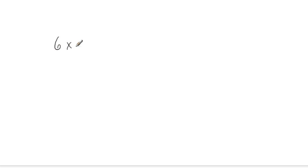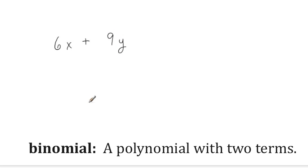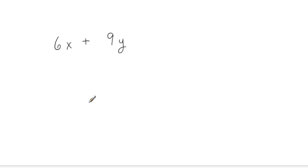Let's try another one. Let's consider 6x plus 9y. In this case, we're dealing with just a binomial, but the concept is the same. We want to look for the greatest common factor of those coefficients in order to factor it out. In this case, the greatest common factor of 6 and 9 is 3. Again, I don't want to change the value — I want to undo the distributive property without changing the value of the polynomial.